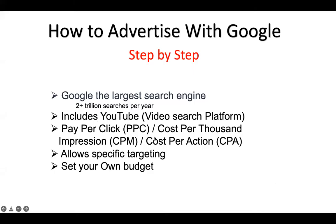There is another bidding strategy called Cost Per Thousand Impressions (CPM). When you're just showing your ad without requiring a click, those are impressions. This strategy is used for spreading brand awareness — your ad is shown to people, and you pay per thousand impressions.